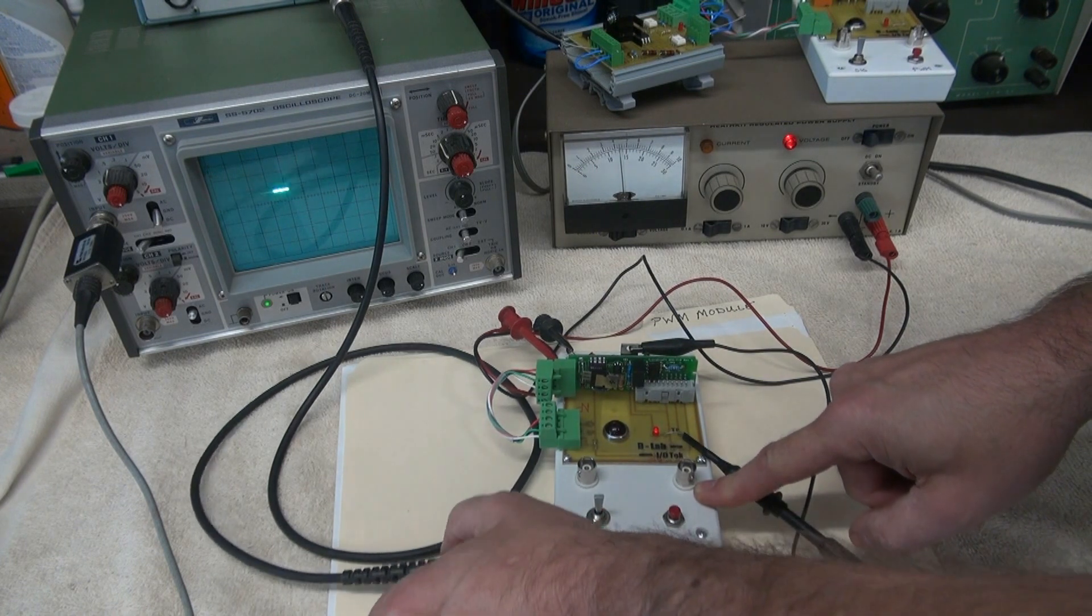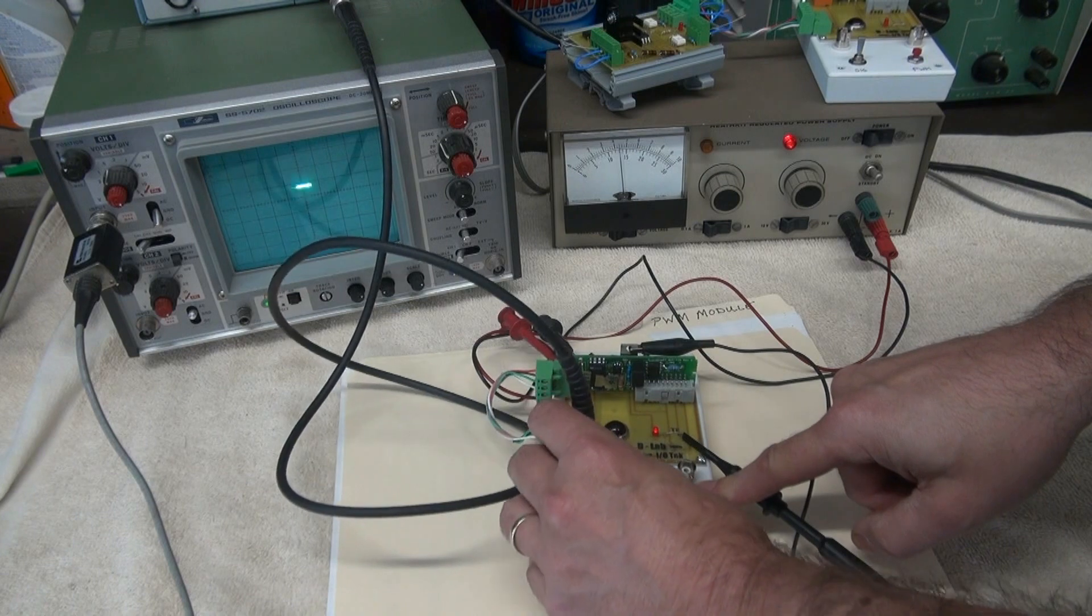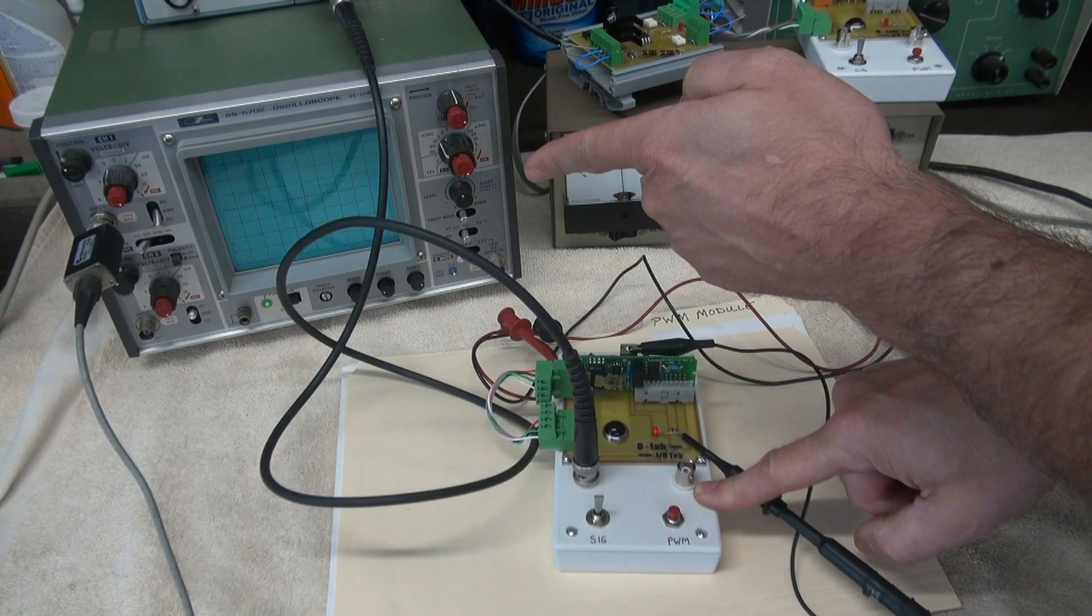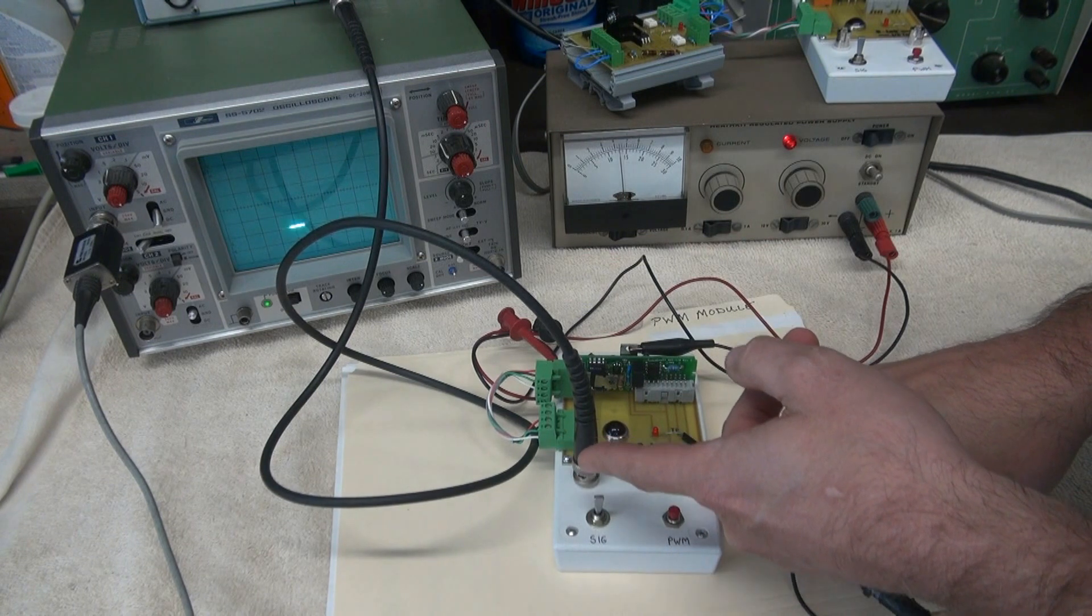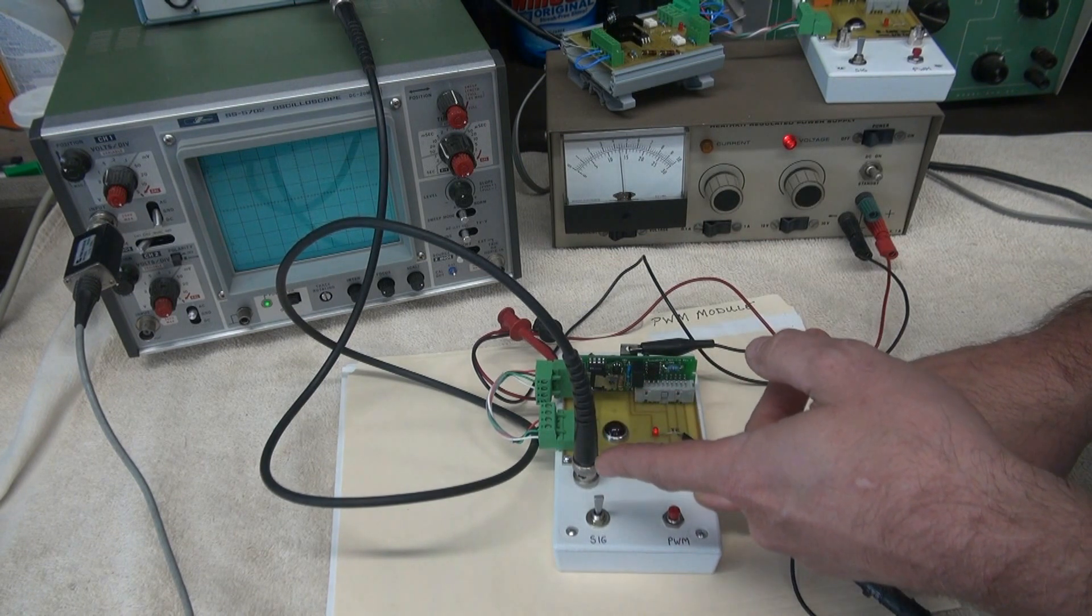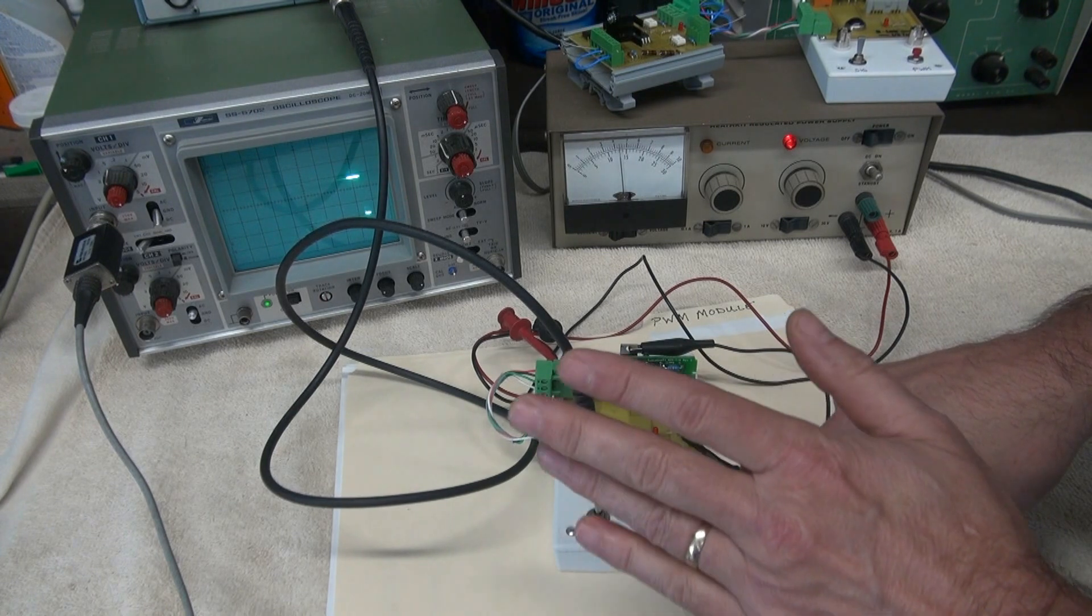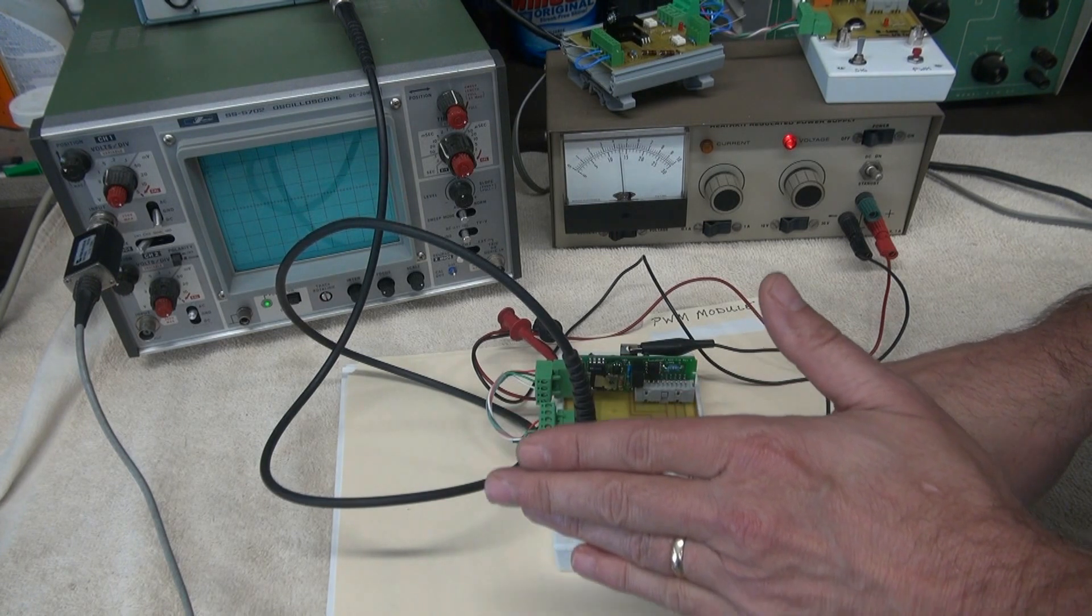So now I could take a pulse generator and observe the square wave. Now this pulse coming in here is actually a 10 volt signal. And this thing is isolated and it reduces that to a zero to five for your digital inputs.